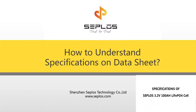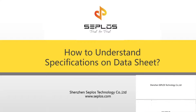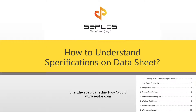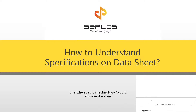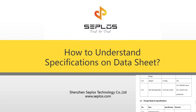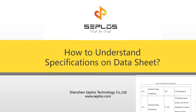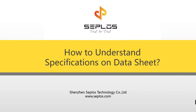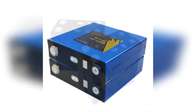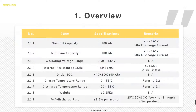Many people do not pay attention to the data sheet — they just design the battery pack as they want. Today we are offering a video to explain how important the data sheet is. It will help you decrease the risk of your battery pack and extend your battery pack cycle life. Let's take Cyprus 3.2V 100Ah battery cells as an example. First is the overview, which tells some basic information about the cell.